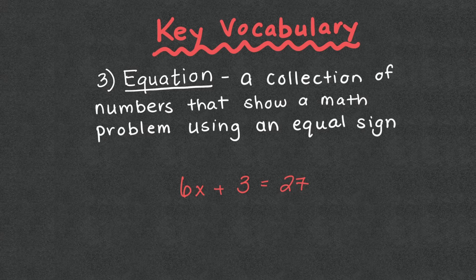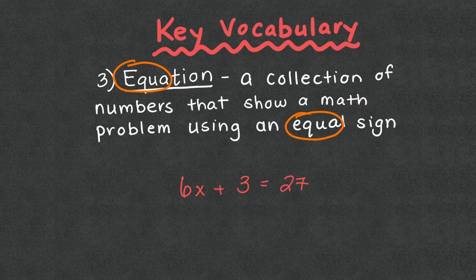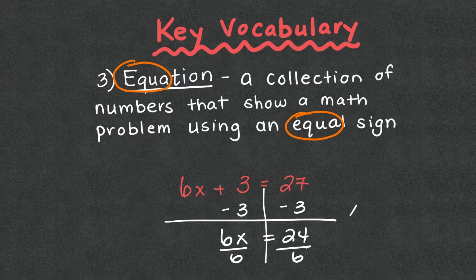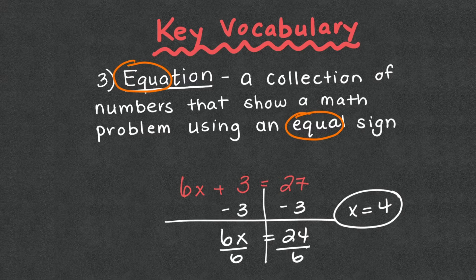To know the difference between expression and equation, notice the prefixes match — equation has an equal sign. For example, 6x + 3 = 27 is solvable: subtract 3 from both sides to get 6x = 24, divide both sides by 6, and x equals 4. That's the difference between an expression and an equation.